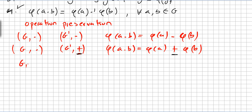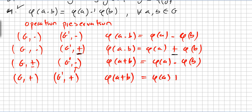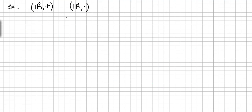If G is under addition and G-prime is under multiplication, then phi of A plus B equals phi of A times phi of B, so the operation is preserved. If both G and G-prime are under addition, then phi of A plus B equals phi of A plus phi of B. Now let us take a first example.